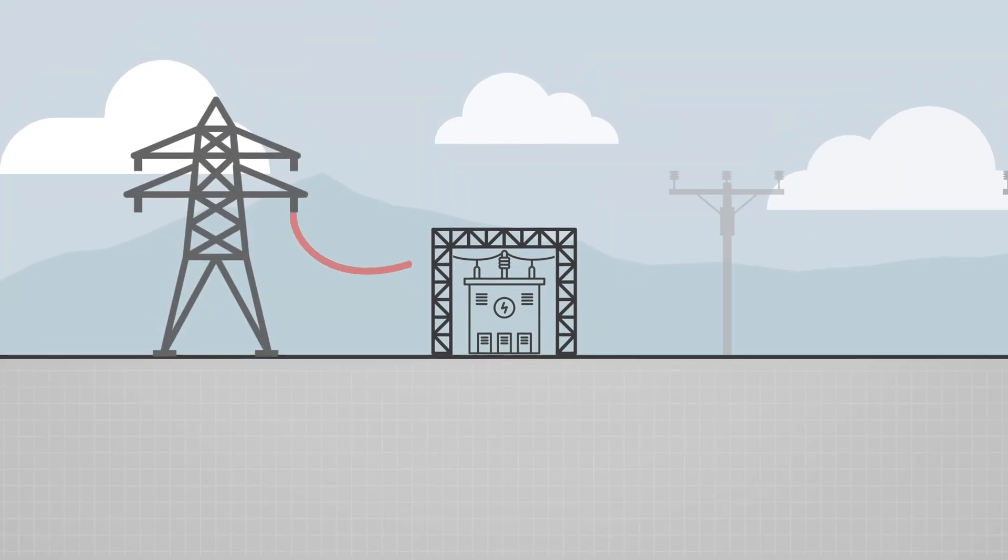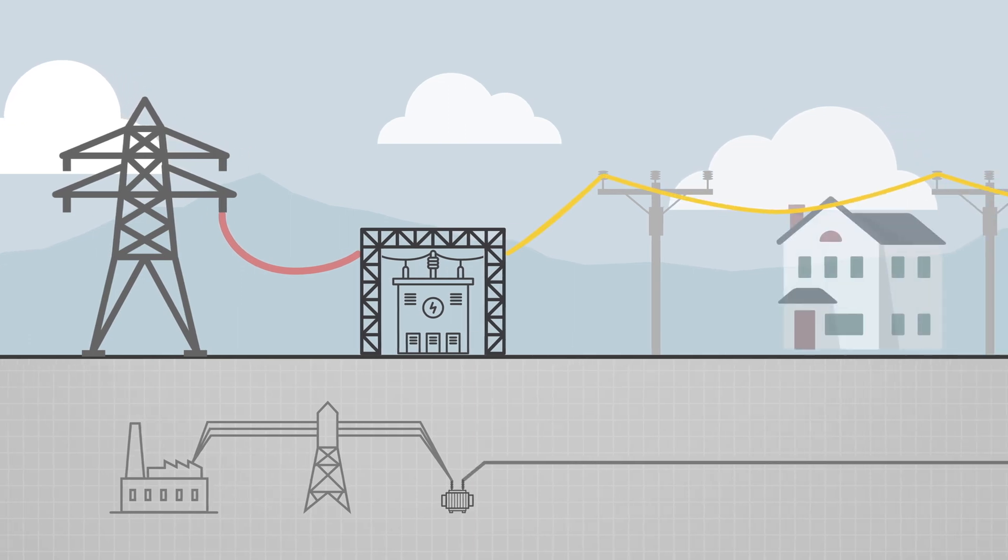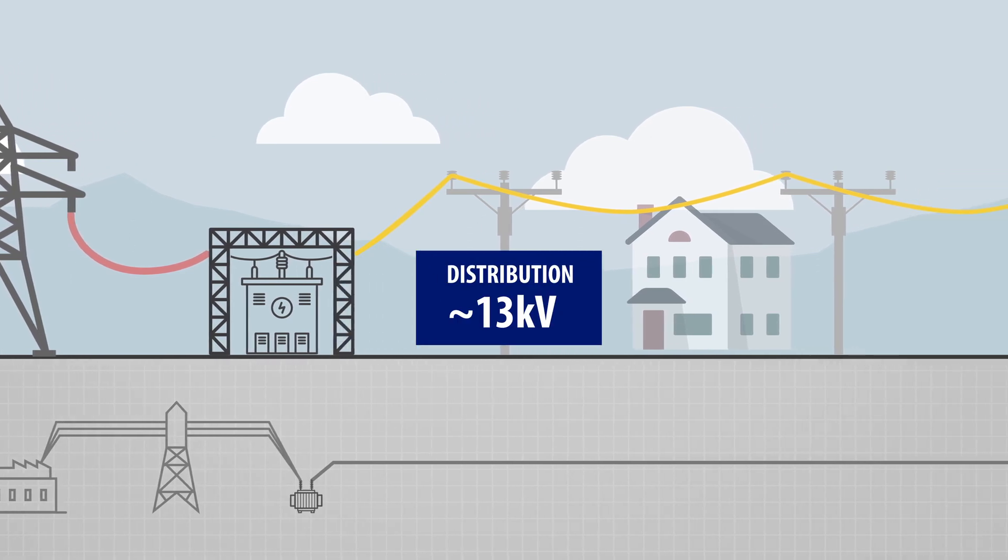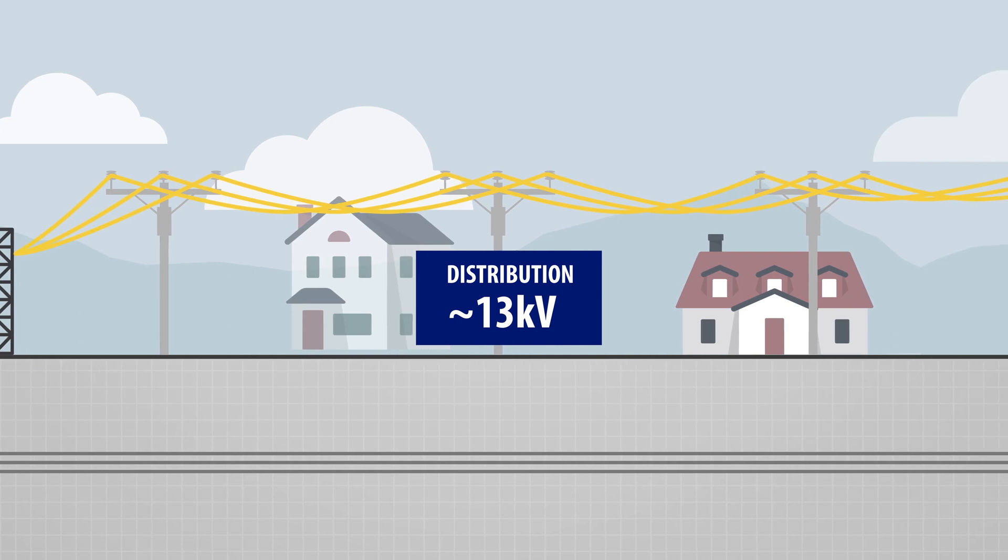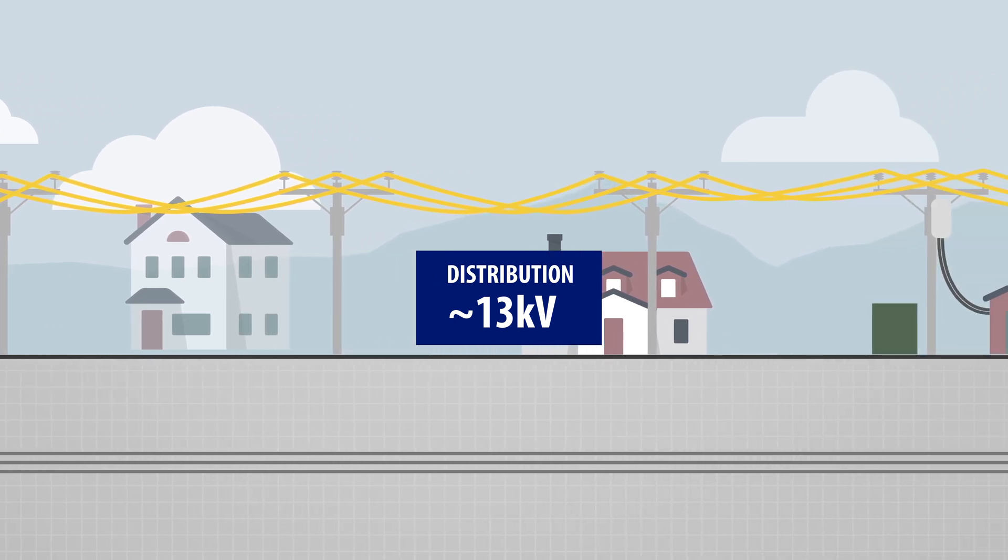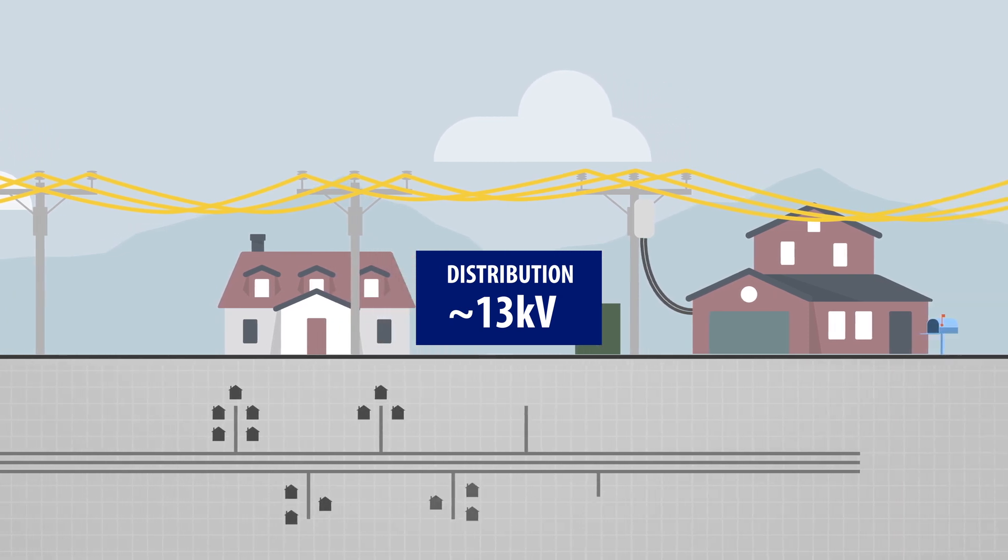After being stepped down in substations, electricity travels at lower voltages that can be safely distributed around our homes and businesses. The three phases of local AC distribution travel through the feeder lines that you may see running along main roads. From there, single phase lines, or taps, run down side streets.